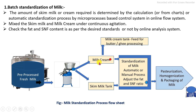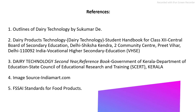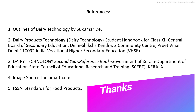After packing, the milk is stored, distributed, and transported under refrigeration conditions. Whatever excess milk cream is separated from the milk is used for the production of butter and ghee in the processing line. These are the main steps involved in the production of standardized milk, or in the milk standardization process. Thank you very much.